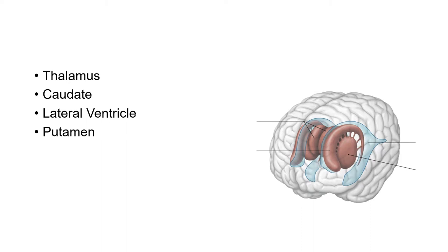This slide is for practice. Using the previous slide, go ahead and pause and label the thalamus, the caudate nucleus, the lateral ventricle, and the putamen. Note that caudate and caudate nucleus are used interchangeably — you can call it either. Take your time, then come on back.